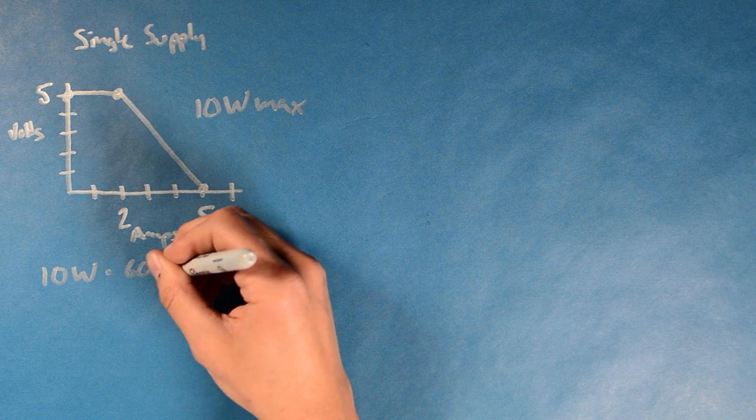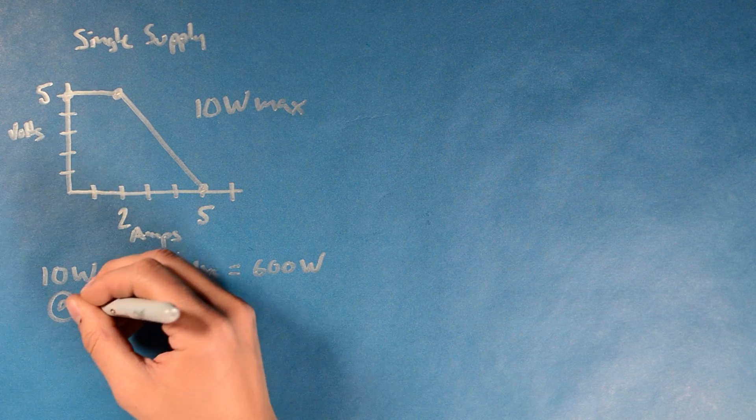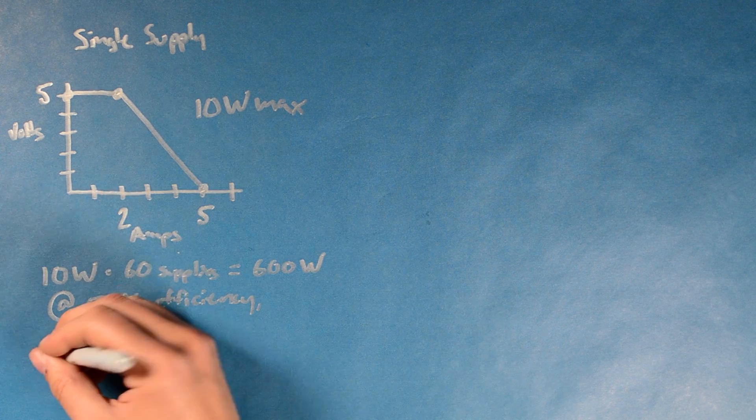60 supplies will therefore generate 600 watts. If we assume these supplies are only 50% efficient, that's 1,200 watts.